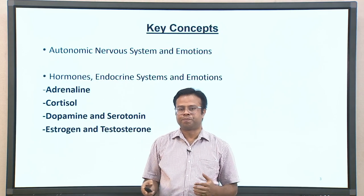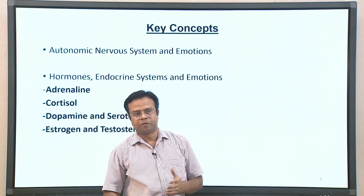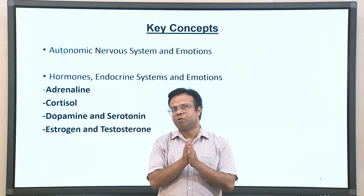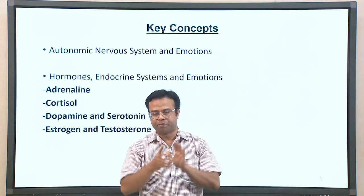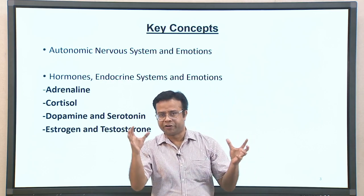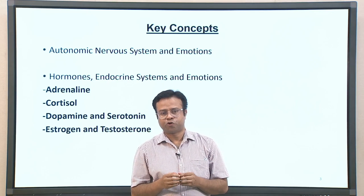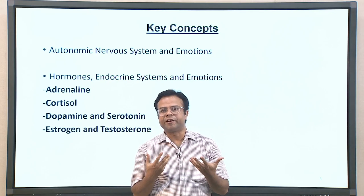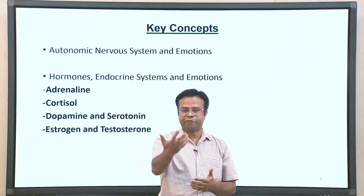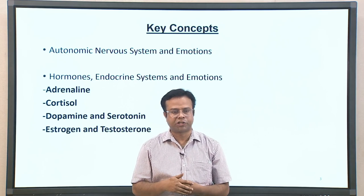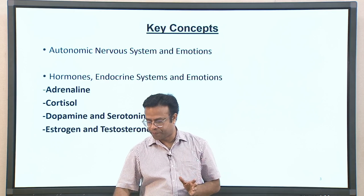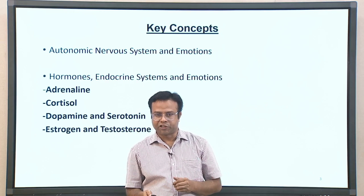Today we will be talking about how emotion influences your body, and the next lecture will focus on how emotion influences your brain. In today's lecture we will focus on the autonomic nervous system and its relation to emotions, as well as some hormones significantly associated with the experience of emotions — specifically adrenaline, cortisol, dopamine, serotonin, estrogen, and testosterone.